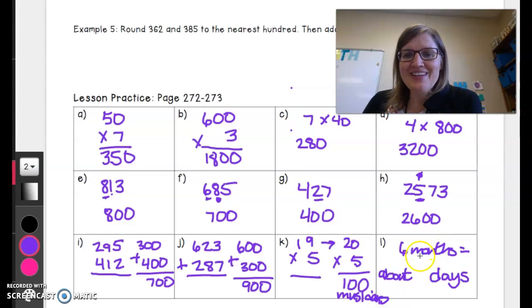And then finally our last one. About how many days are in 6 months? I know that on average we have about 30 days in every month. So 6 months times 30 gives me about, we have about 180 days in 6 months. And there you have it.